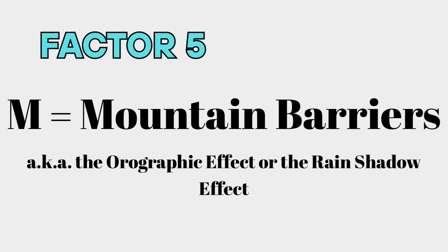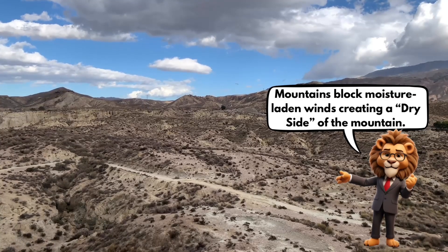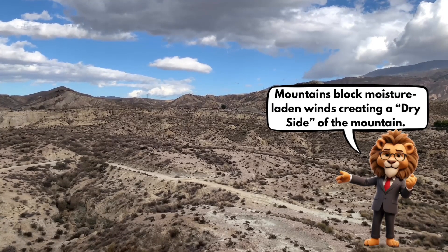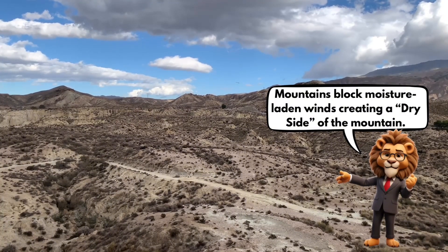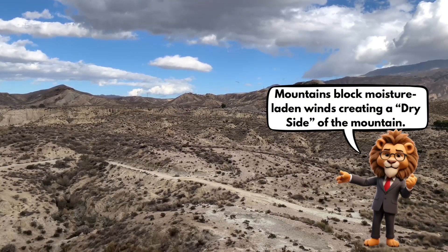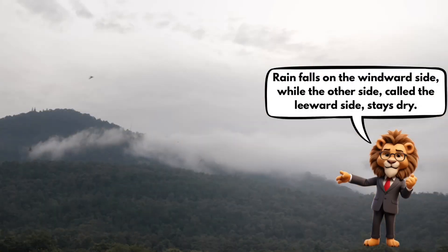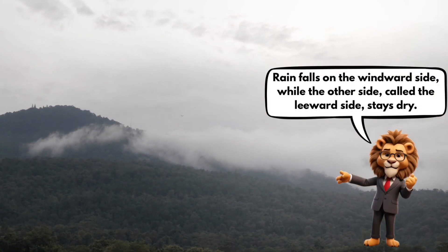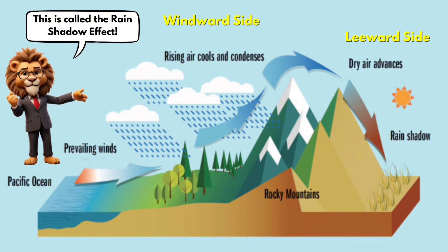Our fifth factor is mountain barriers. Mountains block moisture-laden winds, creating a dry side of the mountain. Rain falls on the windward side, while the other side, called the leeward side, stays dry. This is called the rain shadow effect.